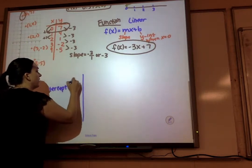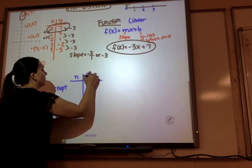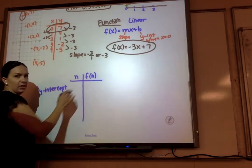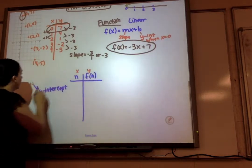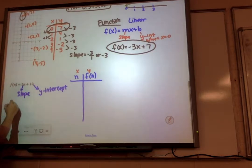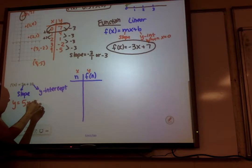I'm going to start with my table. And I'm calling it n and f of n instead of x and y, but it's the same thing. If you feel better with x and y, change it. y equals 5x plus 10.